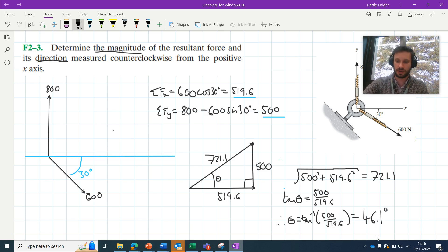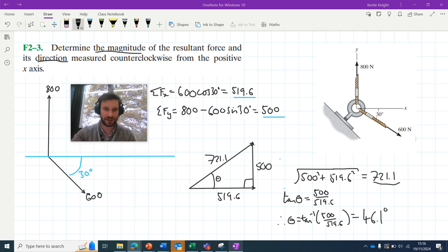So these are our two answers here. We've got this 721.1—let's just give it its unit—721.1 newtons. And it's 46.1 degrees from the horizontal. So there we have our solutions.